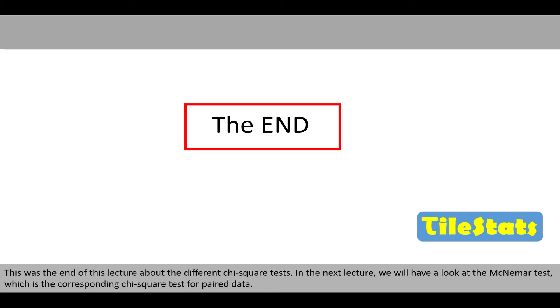This was the end of this lecture about the different chi-square tests. In the next lecture, we will have a look at the McNemar test, which is the corresponding chi-square test for paired data.